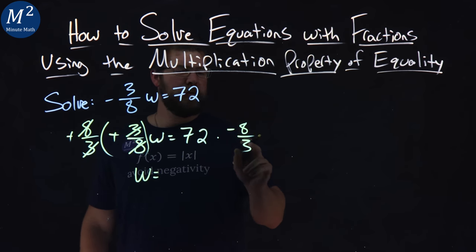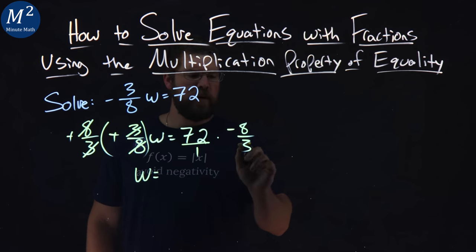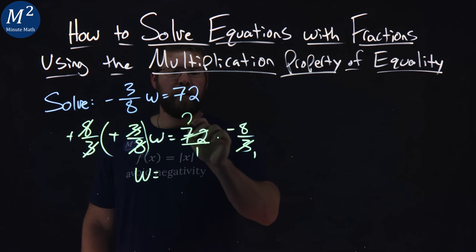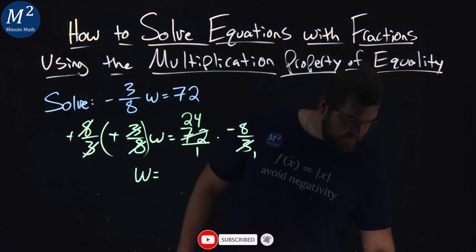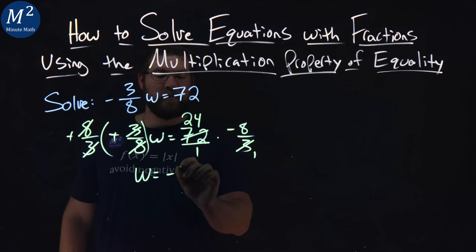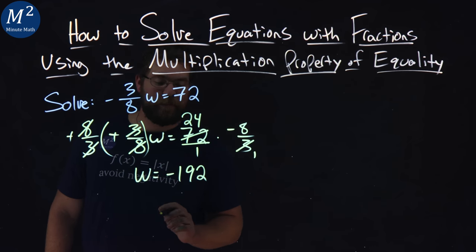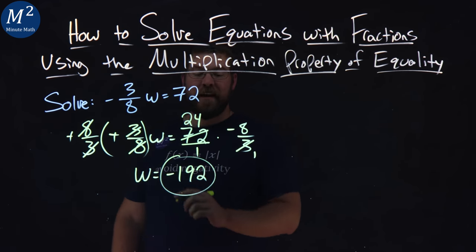Now, 72 times negative eight thirds, that's like 72 over 1. 3 goes into 72 24 times, and look at my notes here. A 24 times a negative 8 is a negative 192. I almost forgot that.